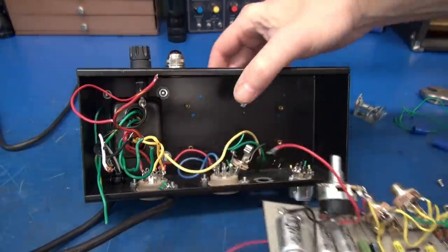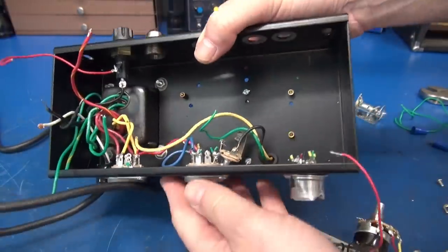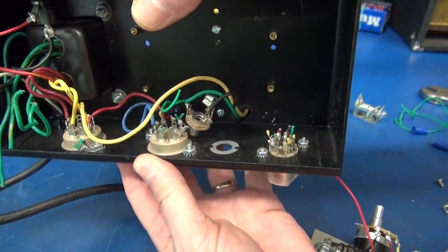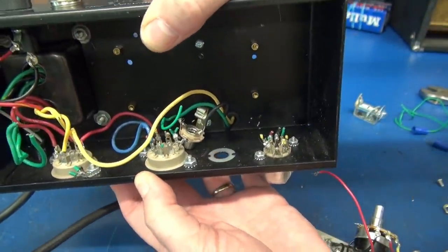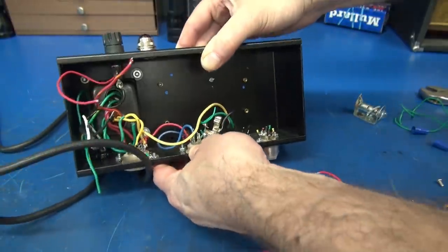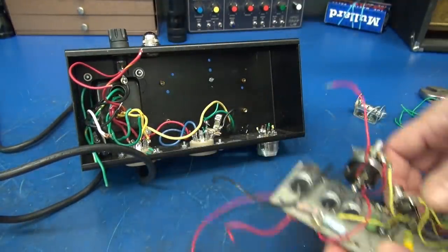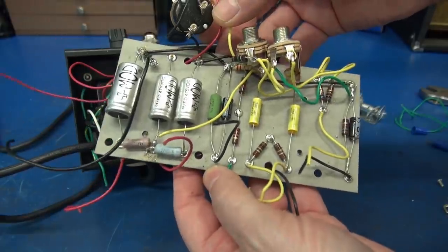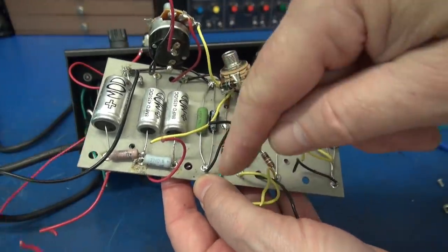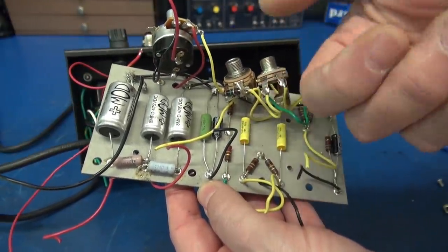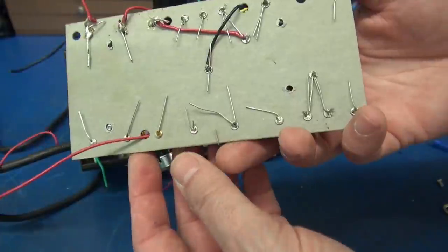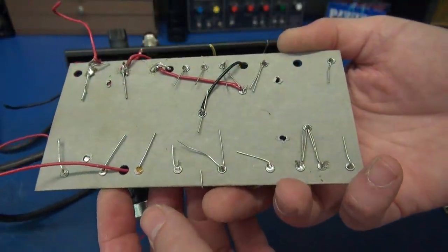So I pulled off the eyelet board. You can get a little bit better view of the soldering on those tube sockets. But you think that's good, wait till you see this. All right, so you can see all of our components mounted on the board. And of course, when you put leads through and you solder them, you clip them, right? Well, not in this case. They're just bent over.